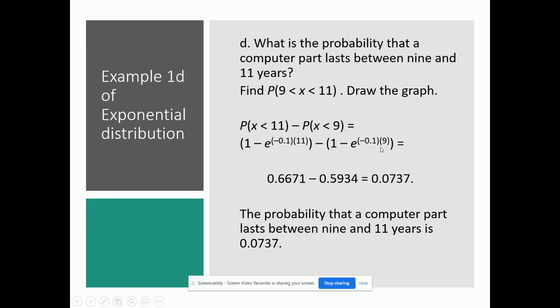So I did – for the probability X is less than 11 is 0.6671. The probability X is less than 9 is 0.5934. So that minus that gives me 0.0737. So the probability that a computer part lasts between 9 and 11 years is roughly 7 percent.